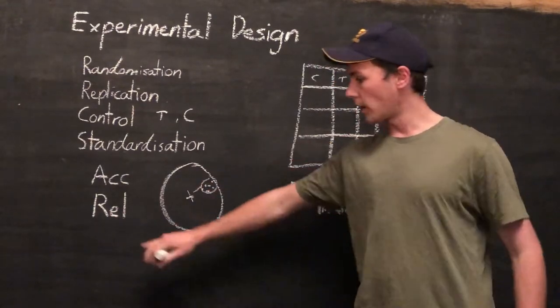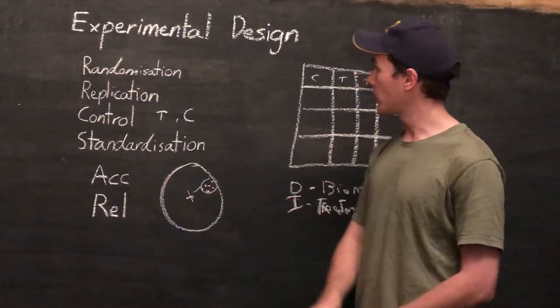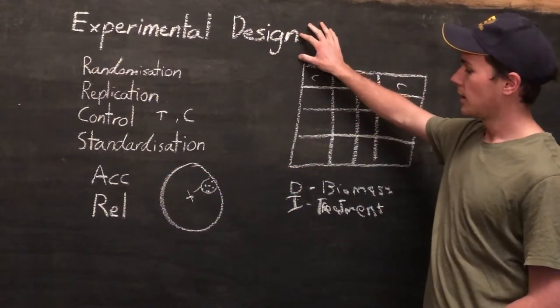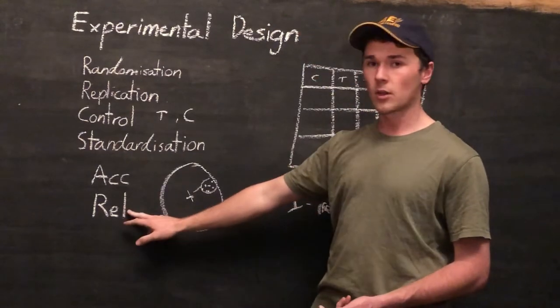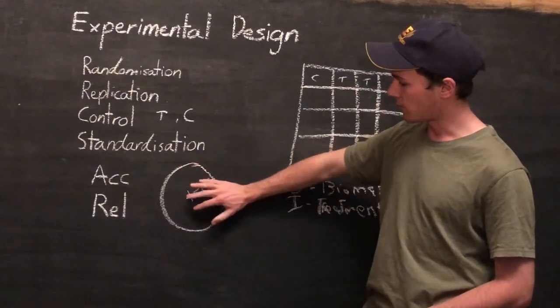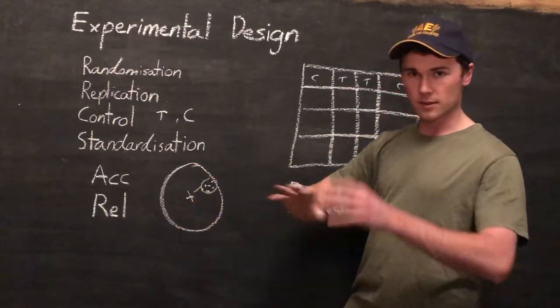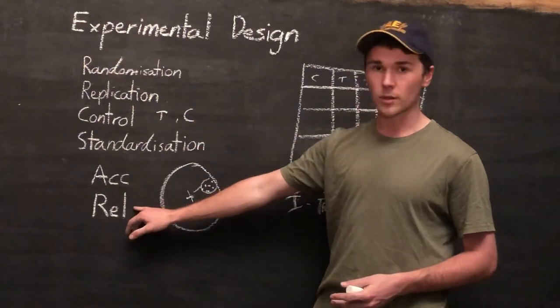So we can be highly reliable, but be extraordinarily inaccurate. We could hit the target all the way up here, but if we're hitting the same point every single time, we're going to be reliable. Whereas if we're shooting around the bullseye, but the grouping is quite spread out, we're not going to be very reliable. So you want both. We want to be able to repeat the experiment every time and get very similar results. But we also want results that spot on the bullseye.